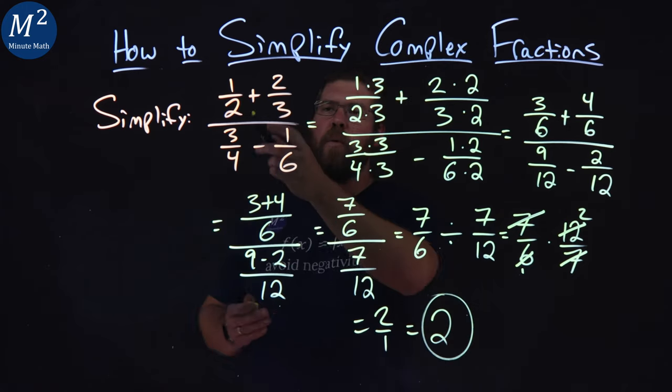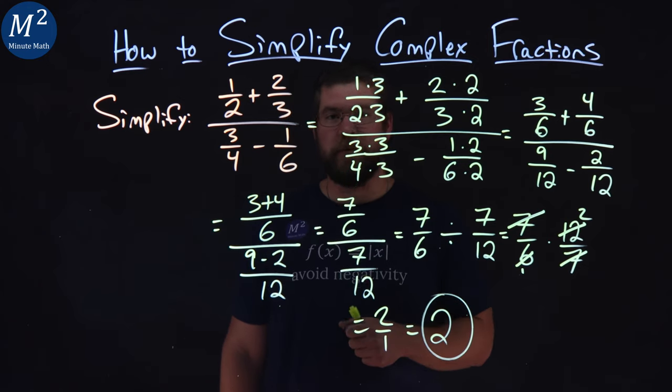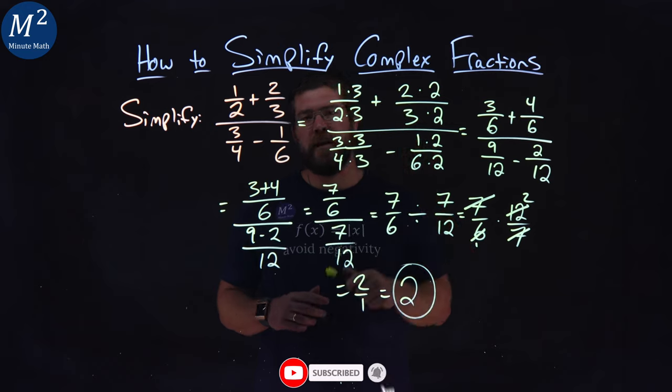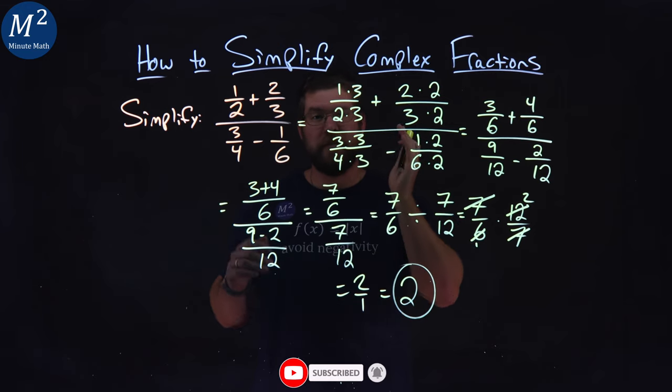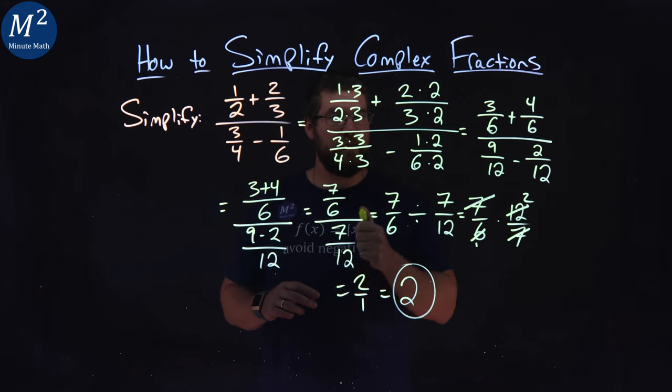And there we have it. 1 half plus 2 thirds over 3 fourths minus 1 sixth simplifies to be 2. I hope you learned something here on how to simplify complex fractions. If you did, make sure you like this video and subscribe to our YouTube channel. This helps us make more of these free math lessons for you and for everyone else. So, as always, thanks for watching.